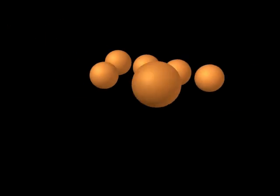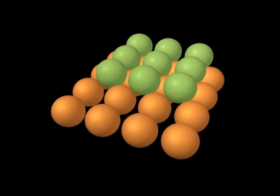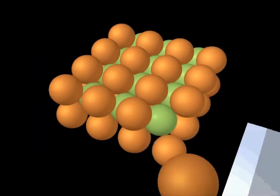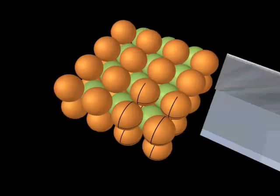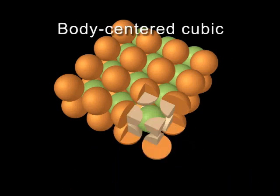A more efficient stacking occurs if we place the second layer over the spaces formed by the first layer, and the third layer over the spaces formed by the second. That simple change leads to 68% of the available volume occupied by the spheres, and a structure based on the body-centered cubic unit cell.